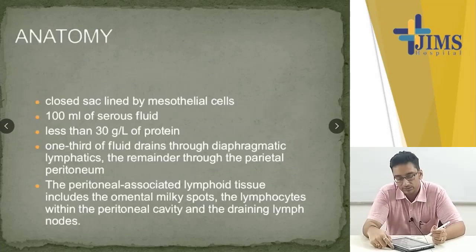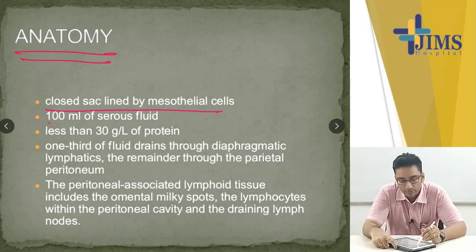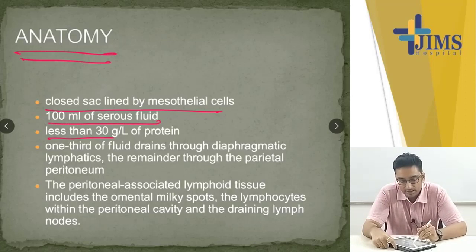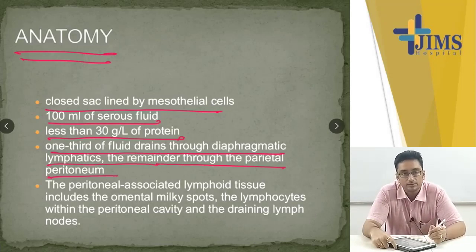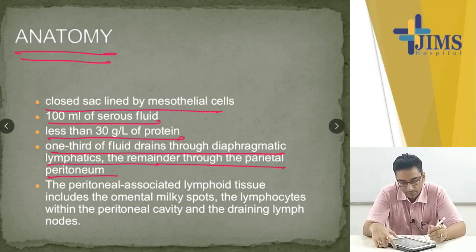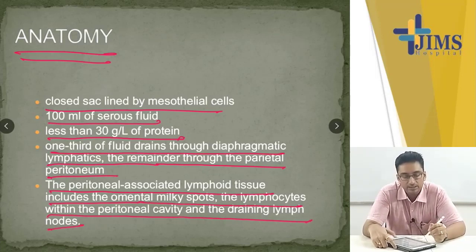Now coming to peritoneal disorders. The peritoneum is a closed sac lined by mesothelial cells, usually containing 100 ml of serous fluid with less than 30 grams per liter of protein. One third of fluid drains through the diaphragmatic lymphatics, and the remainder through the parietal peritoneum. The peritoneal associated lymphoid tissue includes the omental milky spots, lymphocytes within the peritoneal cavity, and the draining lymph nodes.